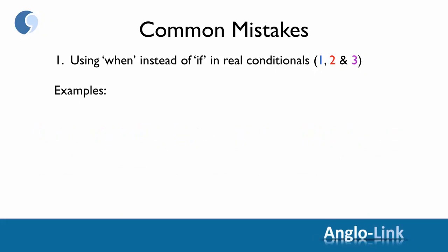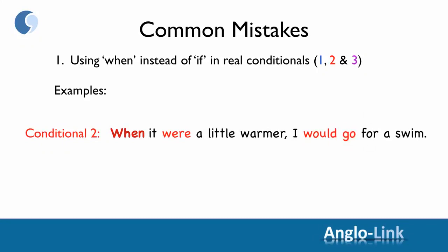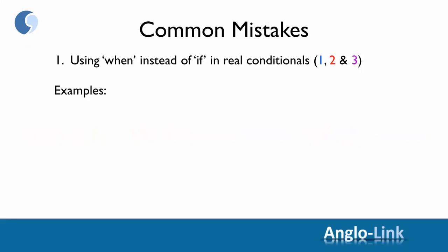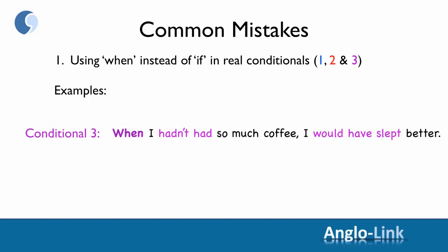In conditional two: 'When it were a little warmer, I would go for a swim' — you cannot use 'when' in a sentence like this; it has to be 'if': 'If it were a little warmer, I would go for a swim.' In conditional three: 'When I hadn't had so much coffee, I would have slept better' — again, you cannot use 'when' in a conditional like this; it has to be 'if': 'If I hadn't had so much coffee, I would have slept better.'